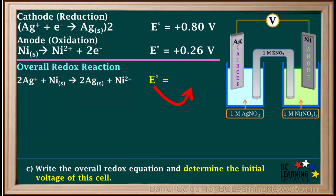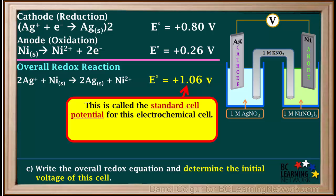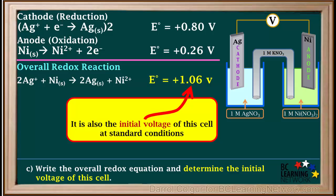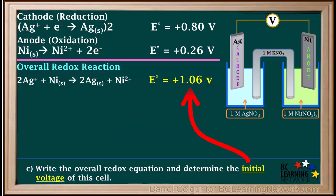Now we can calculate the E⁰ value for the overall redox reaction by adding up the E⁰ values for the half reactions as written. 0.80 + 0.26 adds up to 1.06 volts. This is called the standard cell potential for this electrochemical cell. It is also the initial voltage this cell would have at standard conditions, which are 25°C, 1 molar solutions, and 1 atmosphere pressure when gases are involved. So the initial voltage of this cell is 1.06 volts.